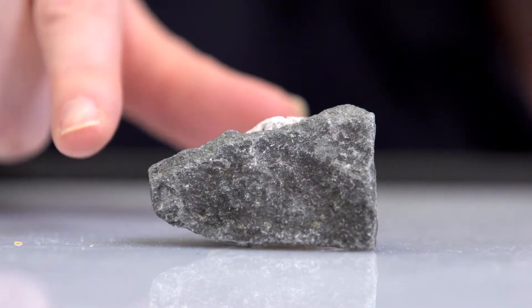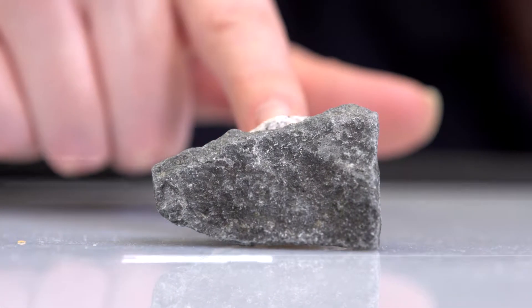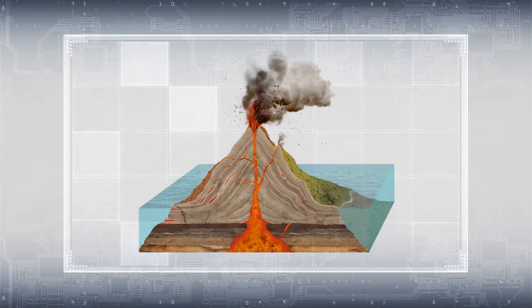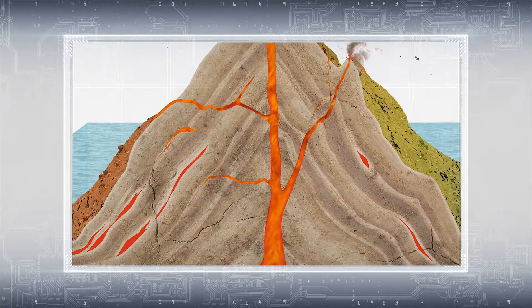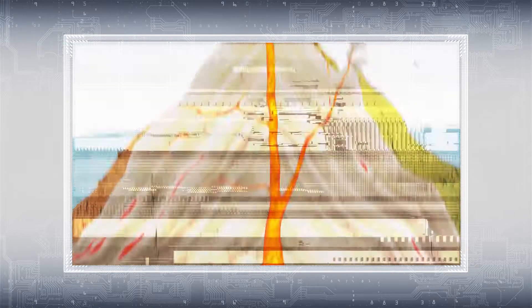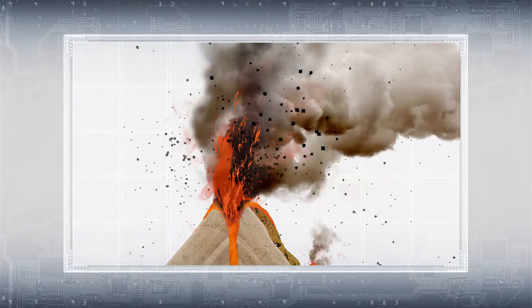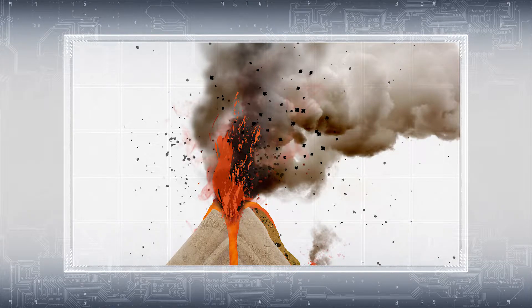Igneous rocks form when molten magma moves from the upper mantle or the lower crust to either just below the earth's surface where we form intrusive igneous rocks, or extrusive volcanic rocks which are formed at the earth's surface where the liquid magma is ejected from the earth's surface at volcanoes.